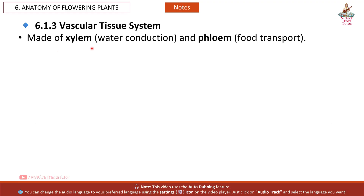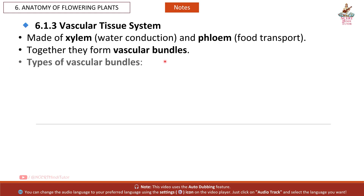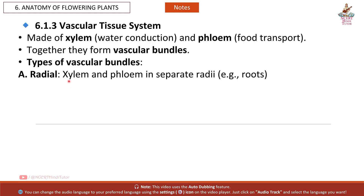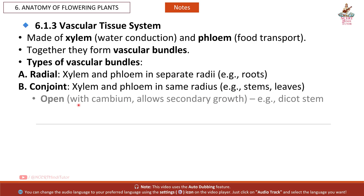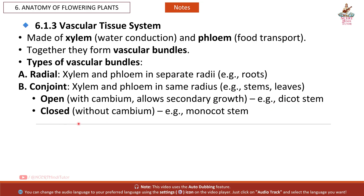The Vascular Tissue System is made of xylem for water conduction and phloem for transport. Together they form vascular bundles. Types include: Radial — xylem and phloem in separate radii, as seen in roots; Conjoint — xylem and phloem in the same radius, as seen in stems and leaves. Conjoint bundles are further classified as Open, with cambium allowing secondary growth as in dicot stems, or Closed, without cambium, as in monocot stems.